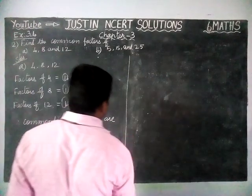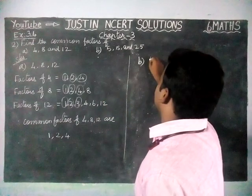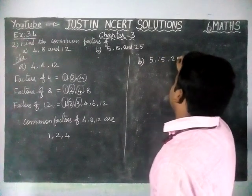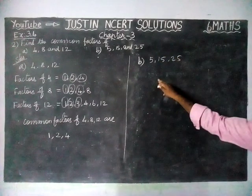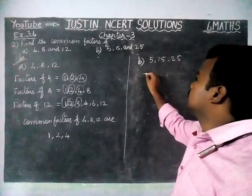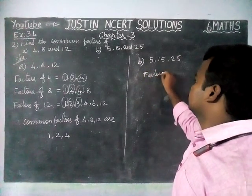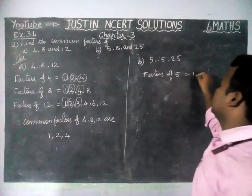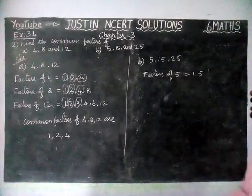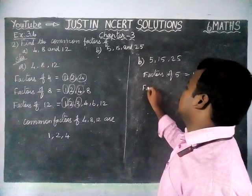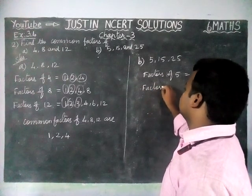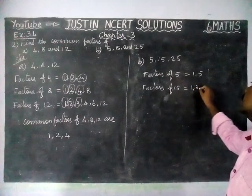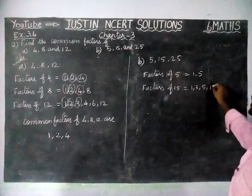Next step, Option B: 5, 15, 25. Factors of 5 are equal to 1 and 5 only. Next, factors of 15 are equal to 1, 3, 5, and 15.